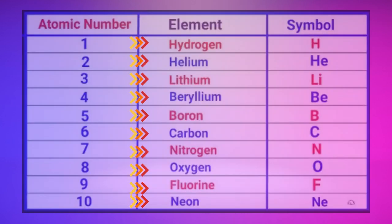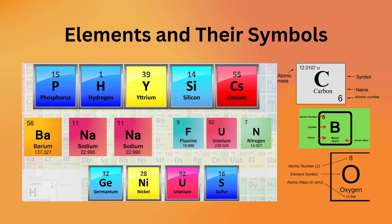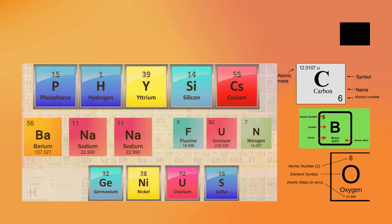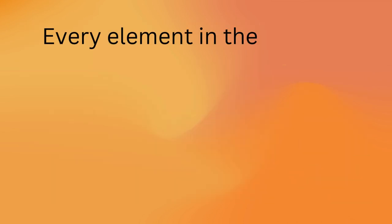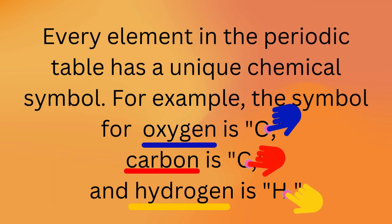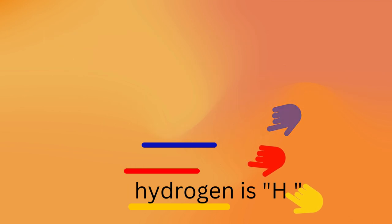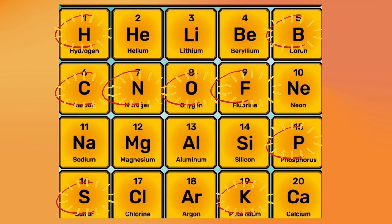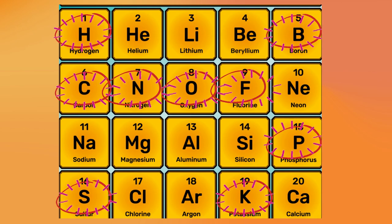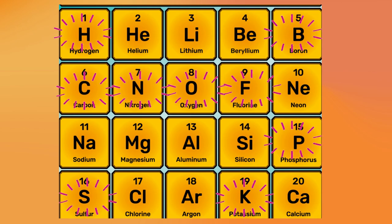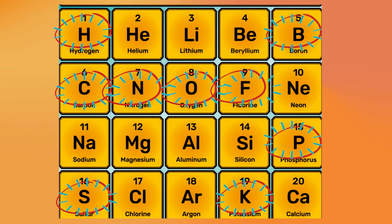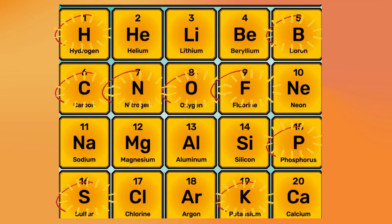Elements and their symbols. Every element in the periodic table has a unique chemical symbol. For example, the symbol for oxygen is O, carbon is C, hydrogen is H, boron is B, nitrogen is N, and fluorine is F.